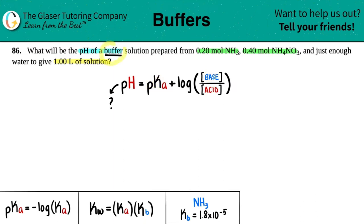Keep in mind that buffers are always conjugate. It's a conjugate solution, and the key is that they both have to be weak. So I have to have a weak base and a weak conjugate acid.